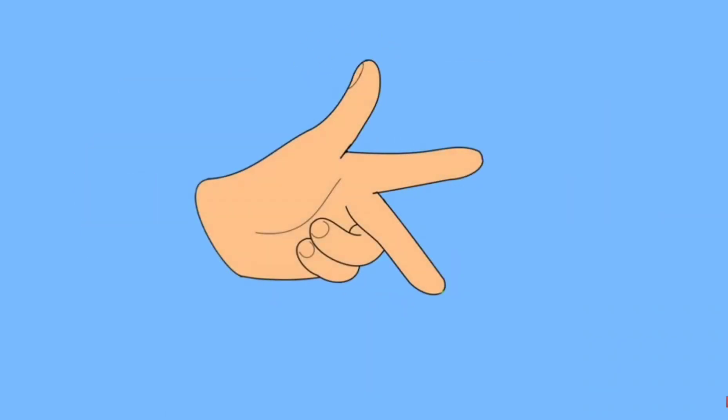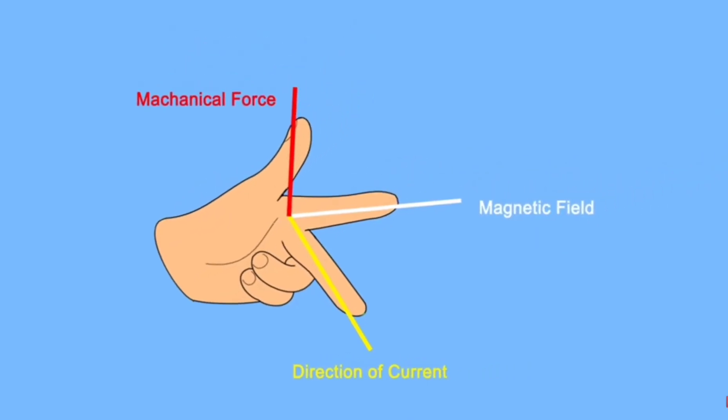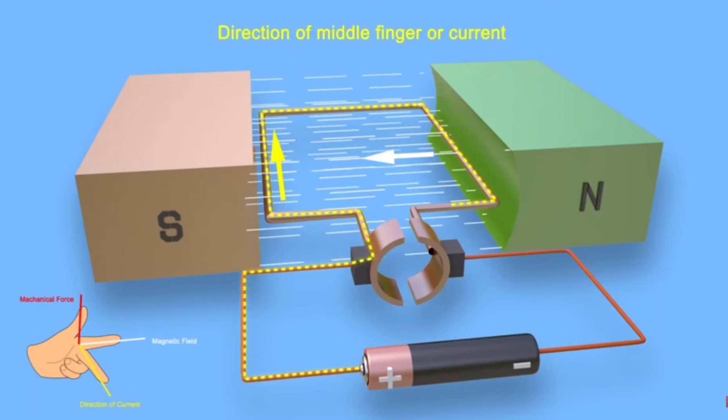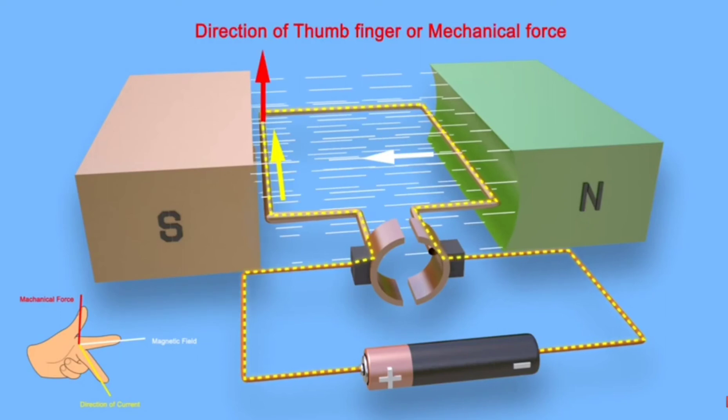To do this, spread out your left thumb, forefinger, and second finger so they are all at 90 degrees to one another. If the forefinger is aligned along the direction of the magnetic field from north pole to south pole, and the second finger is aligned along the direction of the current in the left side conductor, then the thumb indicates the direction of mechanical force.